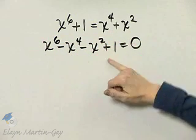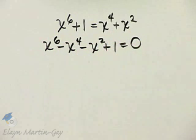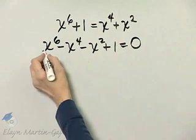We have 1, 2, 3, 4 terms. How might I try factoring a 4-term polynomial? Well, we can try by grouping.